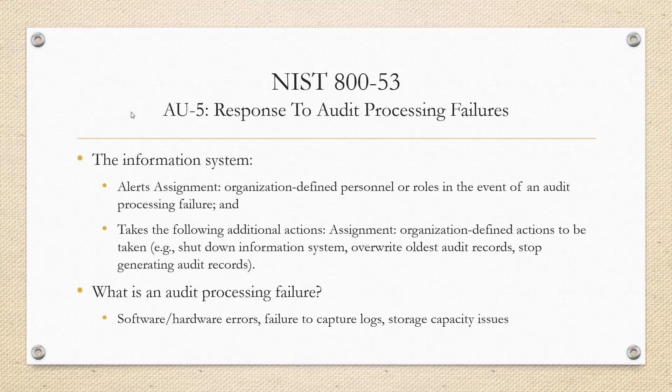Those actions could be in the form of shutting down the information system, overwriting oldest audit records, stop generating audit logs altogether, any of the above, or in addition to anything that your organization may already be doing. One thing that I think is important to call out on this control is: what is an audit processing failure? It could be a plethora of things — it could be a software error, a hardware error, just failure to capture any logs within a specific application or maybe underlying infrastructure, or if you have any storage capacity issues.